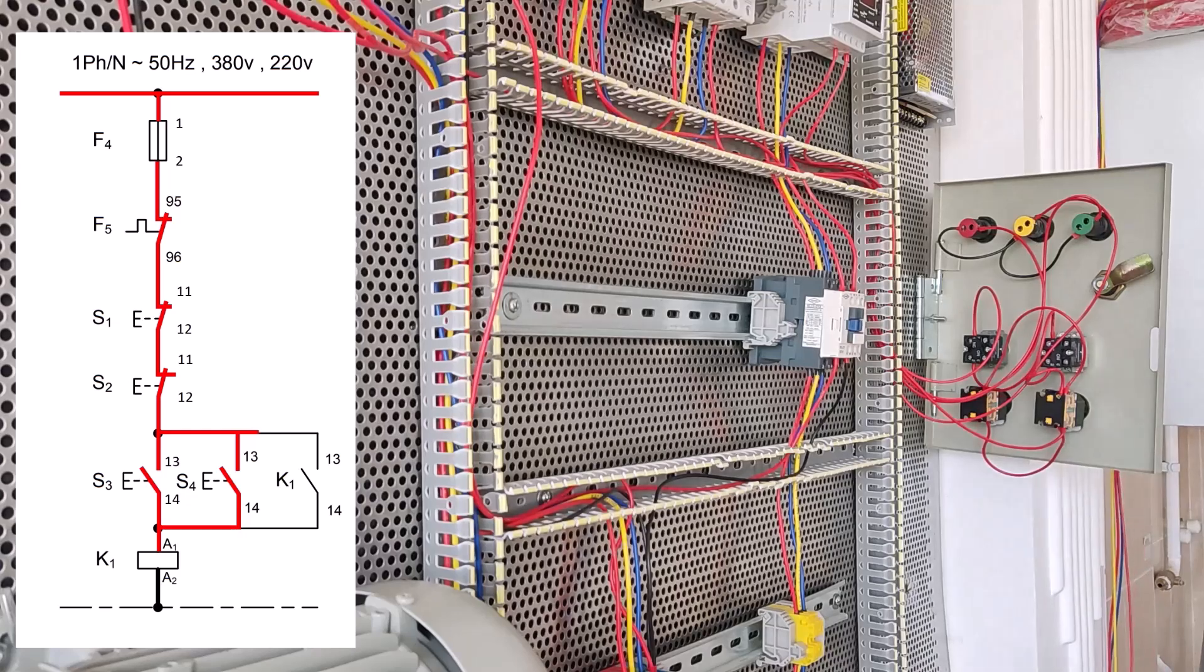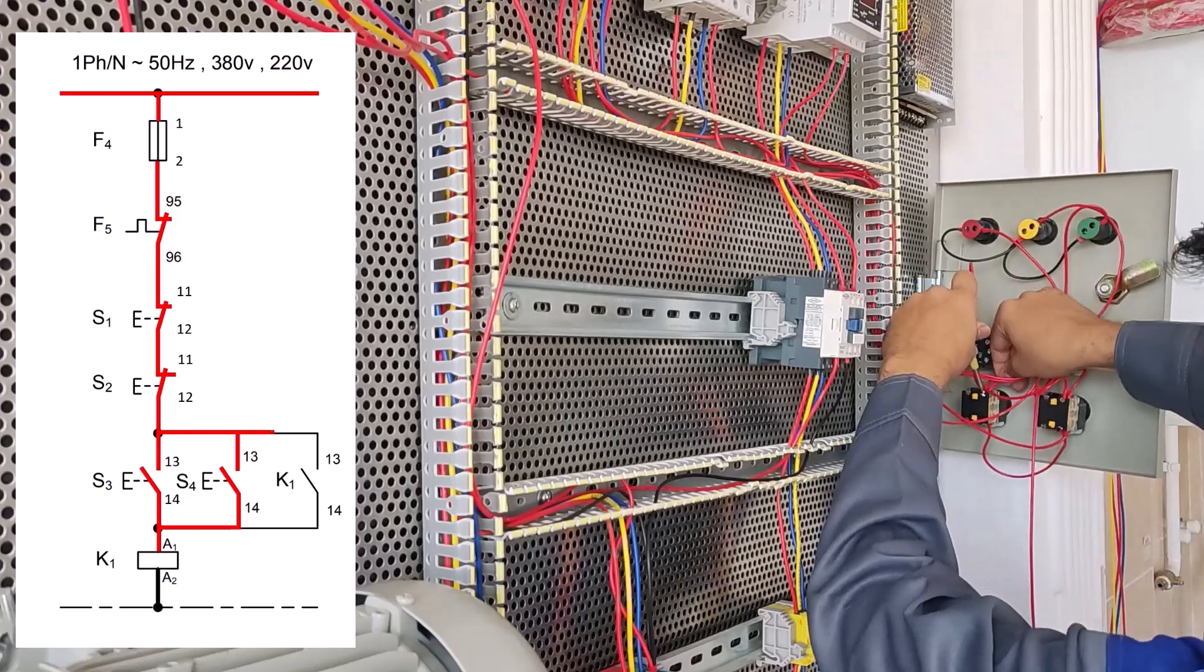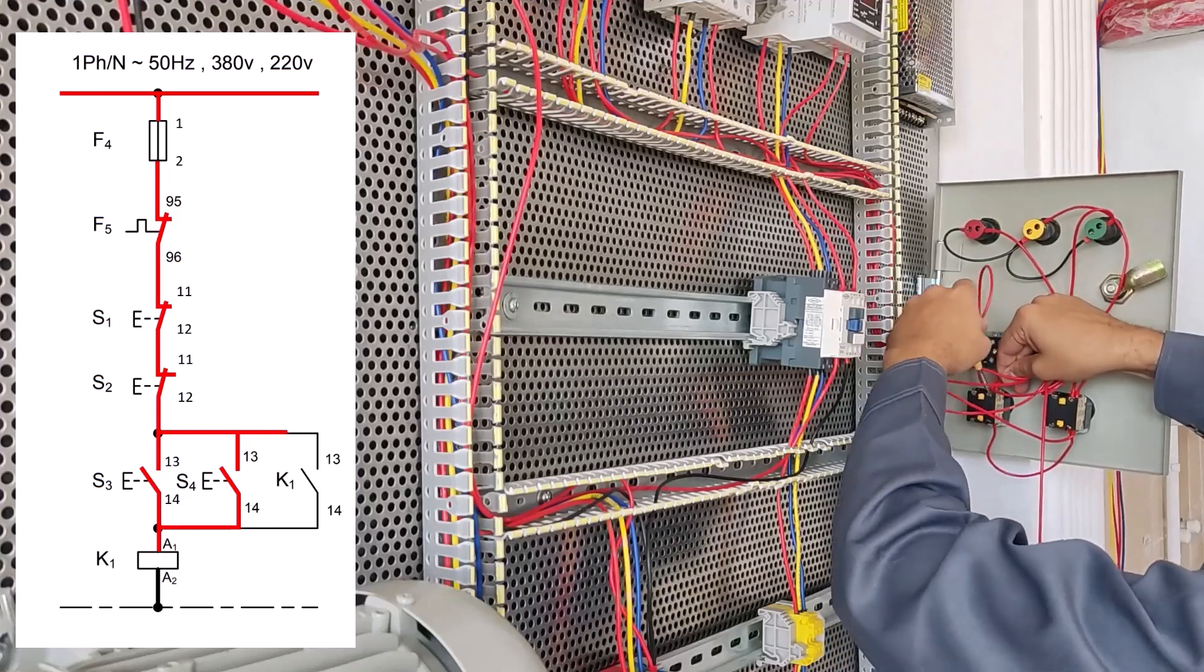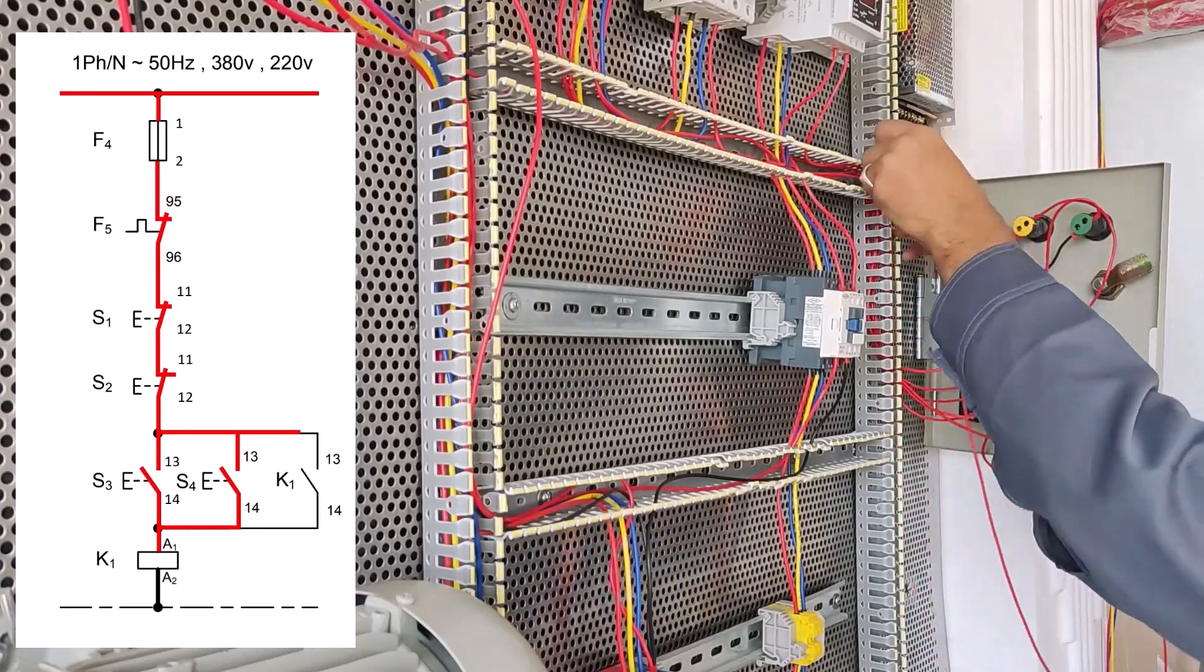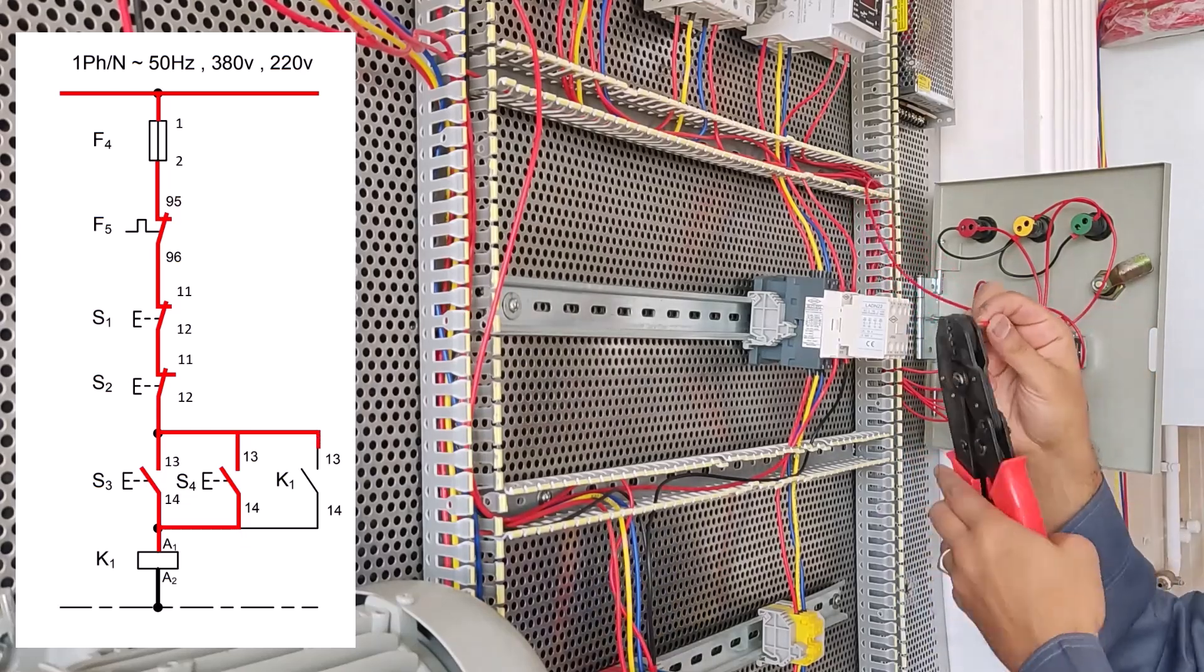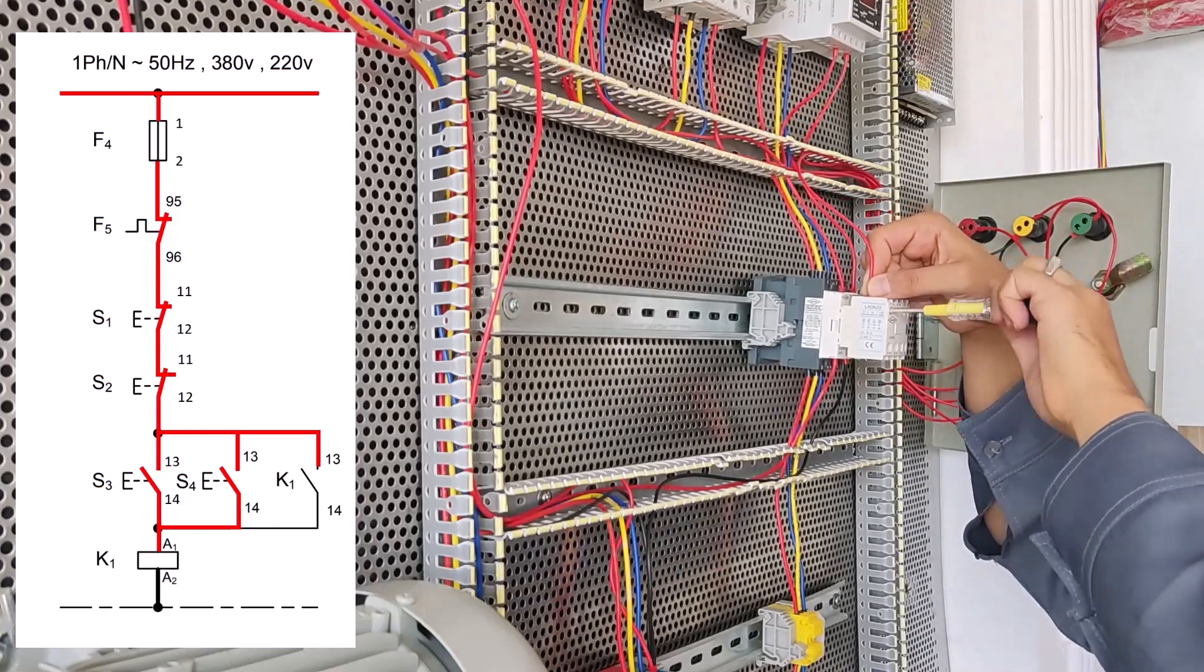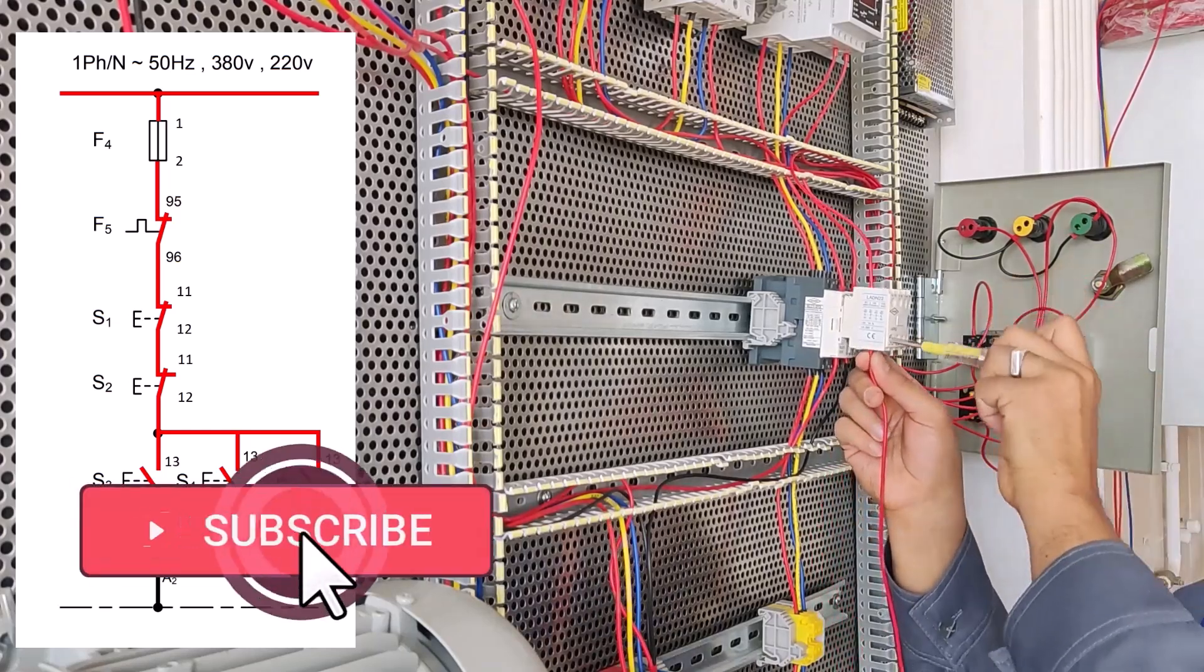Now we connect the 13 and 14 starters of S4 to conductors K1. Because it is a permanent one, but if it was momentary there would be no need to connect. We connect 13 starts S4 to 13 conductors K1 and we connect 14 starts S4 to 14 conductors K1.